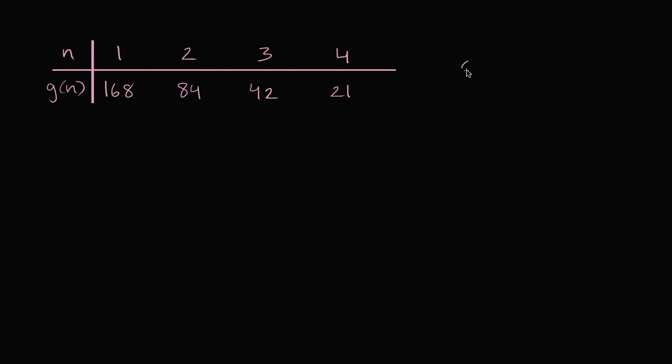So for example, we could say this is the same thing as the sequence where the first term is 168, second term is 84, third term is 42, and fourth term is 21, and we keep going on and on and on.